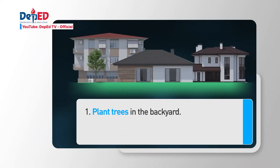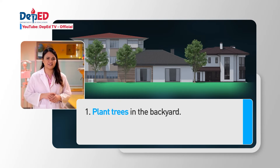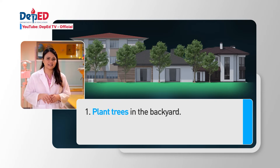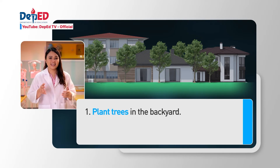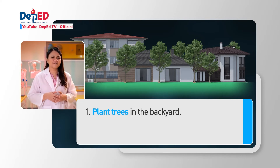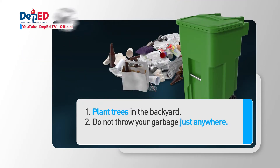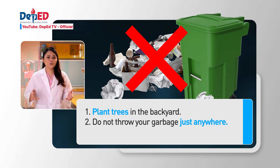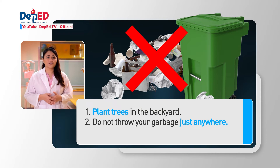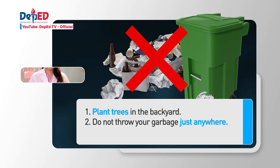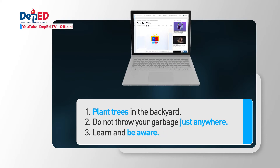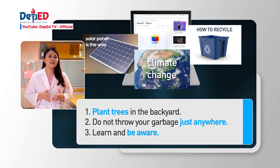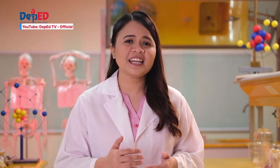Number 1: Plant trees in the backyard. Make it a habit to improve your surroundings by simply planting trees and green plants in it. Trees provide food and oxygen. They help save energy, clean the air, and help fight climate change. Number 2: Do not throw your garbage just anywhere. Proper waste disposal helps prevent water and land pollution. Improper waste disposal is the primary cause of water pollution. And lastly, learn and be aware. We must find out what practices we do every day that can cause harm to us and to our environment so that we can avoid them. We must do our share in maintaining a healthy environment.